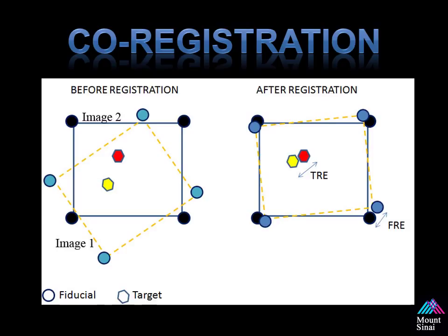The co-registration of two data sets — if you look on the left side of the screen before registration, you see image one and image two. These two images are not aligned. Using the corners, or those things labeled as fiducials, we're able to take that data set and line it up. For surface rendering, we use the triangles as our fiducials. After we line up the data set, you're able to see the target and the fiducials align, but it's usually not perfect. There's always a degree of target registration error, labeled TRE, which is your point of interest, as well as the surface rendering or fiducial registration error, also represented on the right side of the screen.